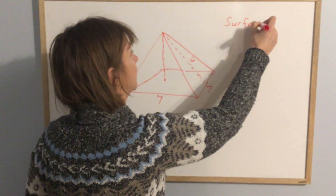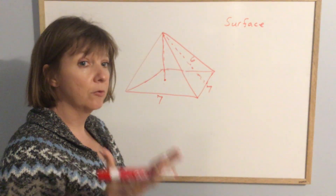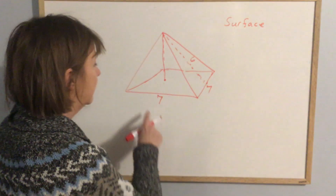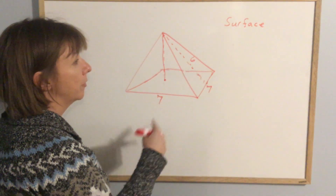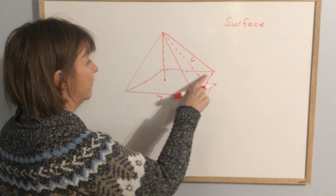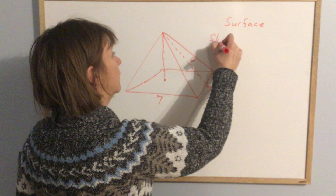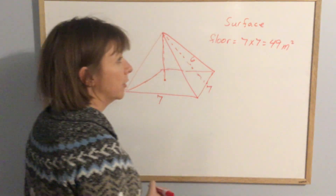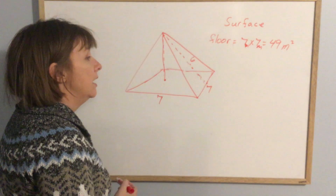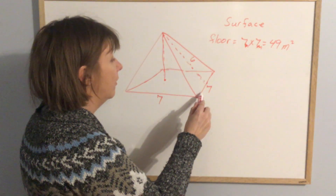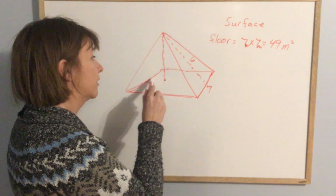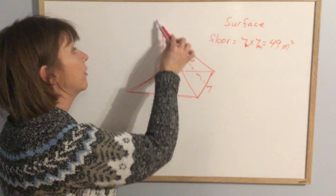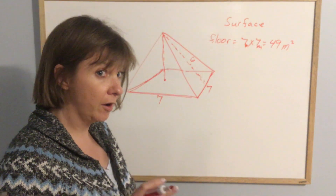This is what's called the slant height — it's the height of the triangle. To find the surface area, there are five shapes: the rectangle that is the floor, and four triangles that make up the walls. In this case the base is a square, so all four sides are seven. Area of the floor would be seven times seven, which is 49 square meters.